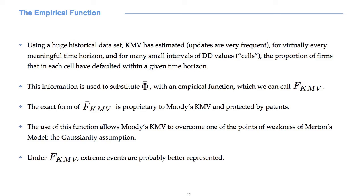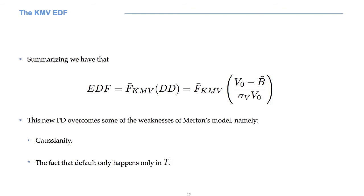Please notice that the use of this empirical F overcomes one of the weaknesses of Merton's model, that is to say, Gaussianity. The use of empirical data allows Moody's KMV to better represent extreme events, and defaults are extreme events, at least if we assume that what we have observed in the past is representative of what we can expect from the future. All in all, the EDF is given by this empirical F computed in DD.